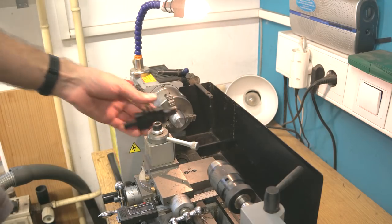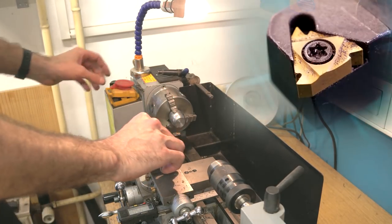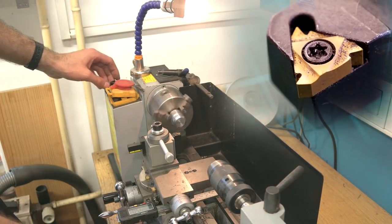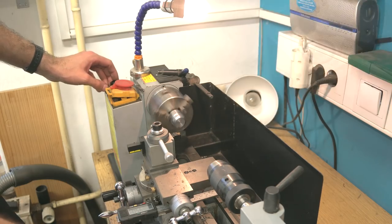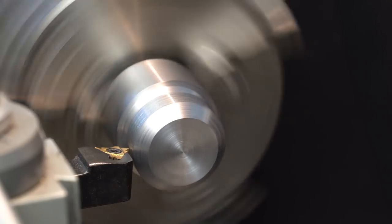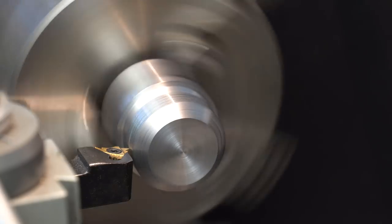Then insert the 60 degree cutting tool for making threads. I use this cheap Chinese indexing thread cutter and it works just great. Now find the touch and set a scale or digital readout if you got it to zero.